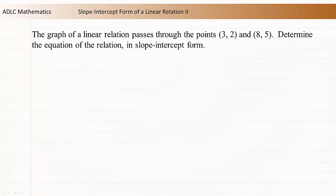The graph of a linear relation passes through the points (3, 2) and (8, 5). Determine the equation of the relation in slope-intercept form.